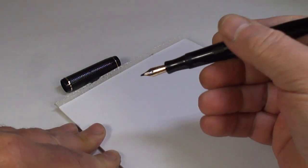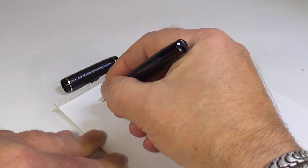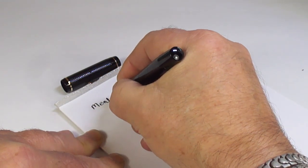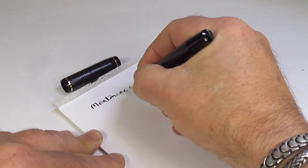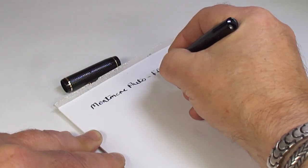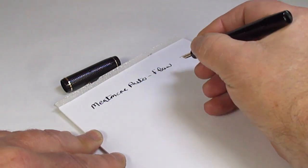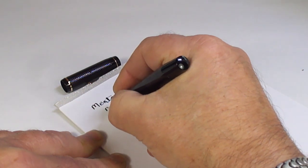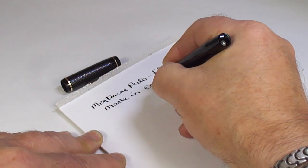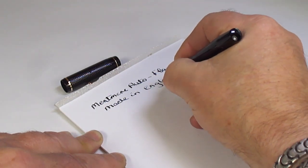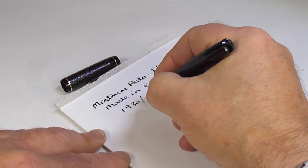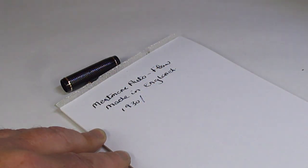Okay, and let's see how the pen writes. So, what we've got is a Mentmore Autoflow Made in England and as we said, we're dating it from circa 1930s, 1940s.